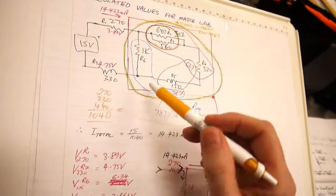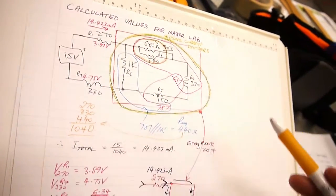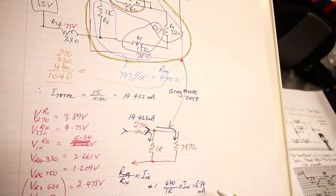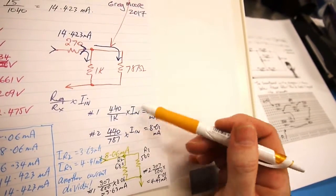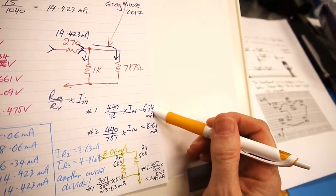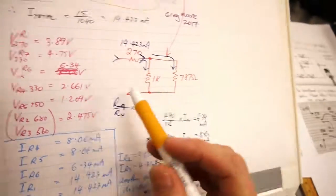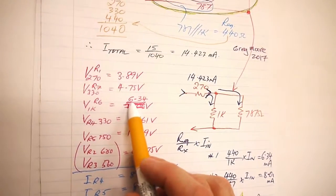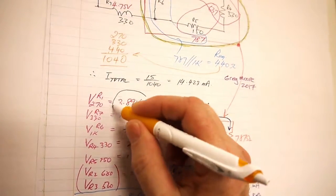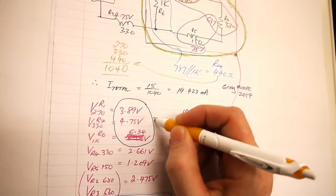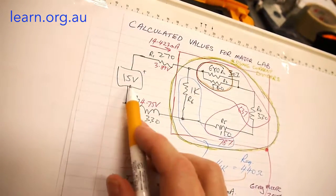VR6 is the next one I looked at. The R6 value, that 1k there, we worked out using that current divider has 6.34 milliamps going through it. So multiply that current times the 1k, VR6 is 6.34 volts. Then we can do a bit of a check: if we add those values together they equal 15 volts, which was the supply voltage.